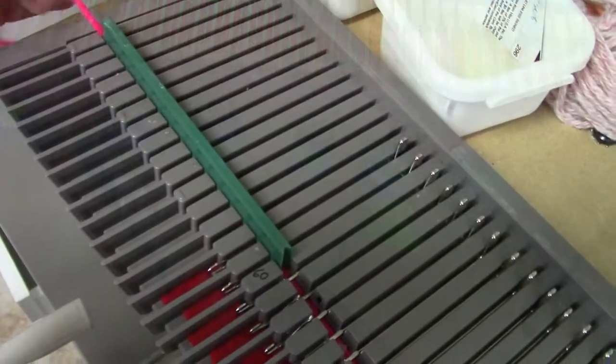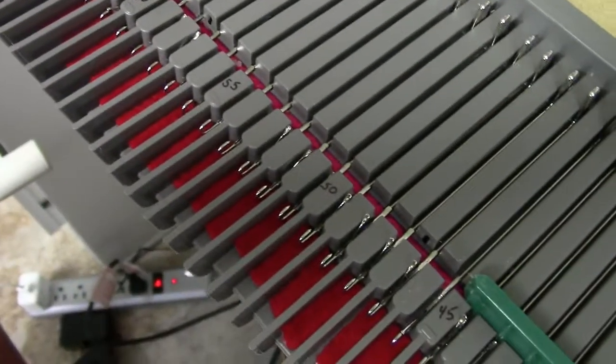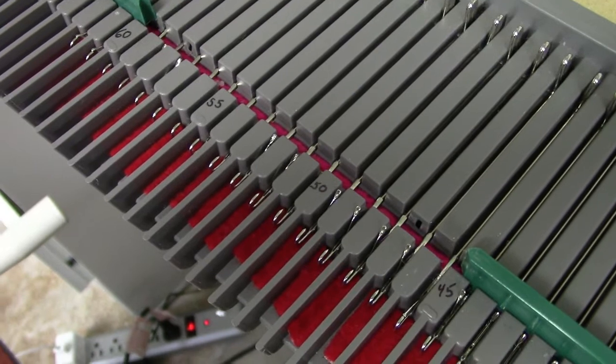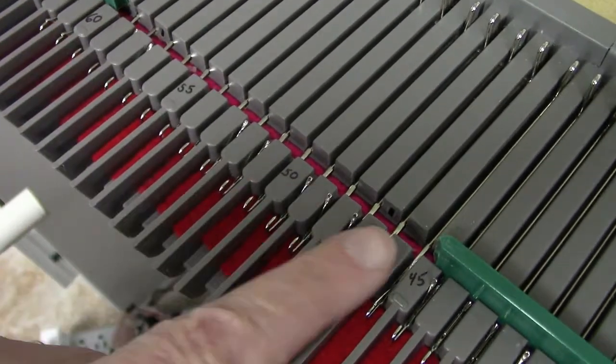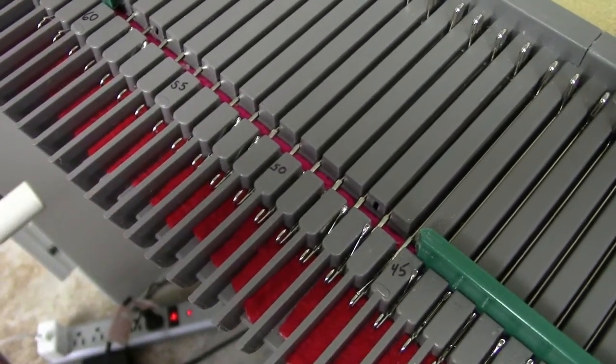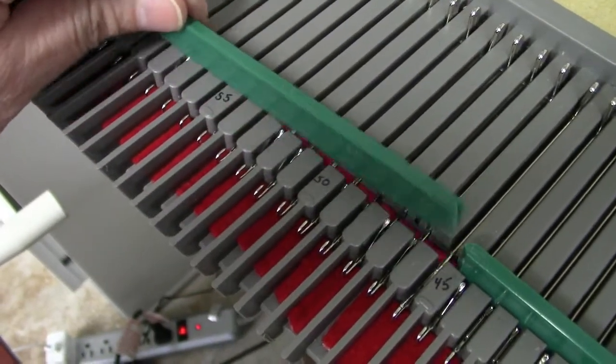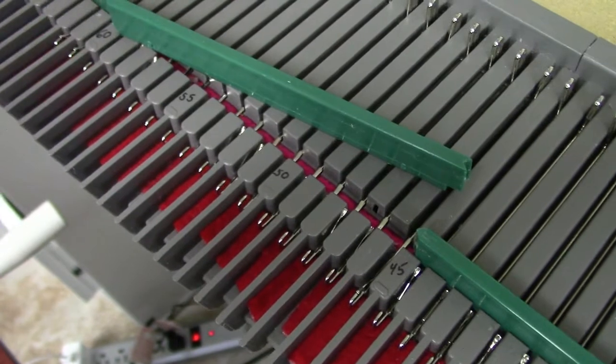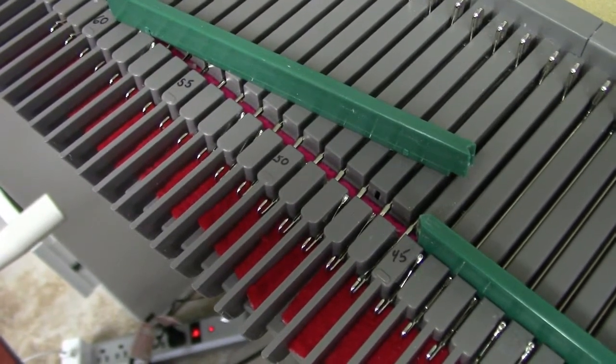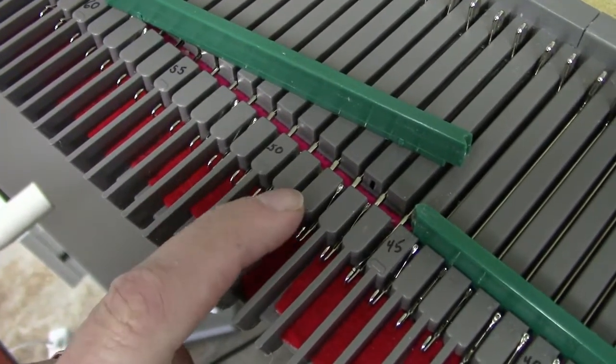Down underneath the needles, I laid a piece of worsted yarn. You don't want it too thick. And then I put the needles on top of that yarn before I put my needle retainer bar in. And then I snapped the retainer bar on top of that. And that also kept the needles from sinking in the front a little bit.